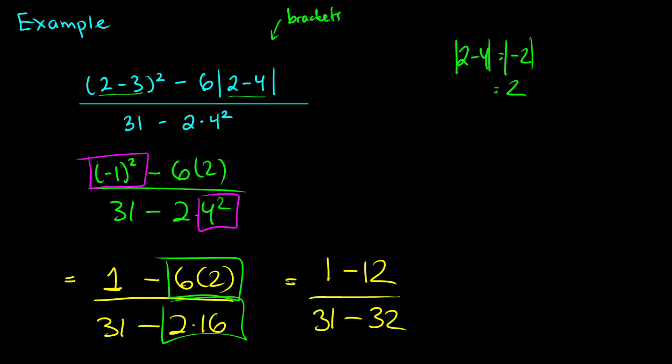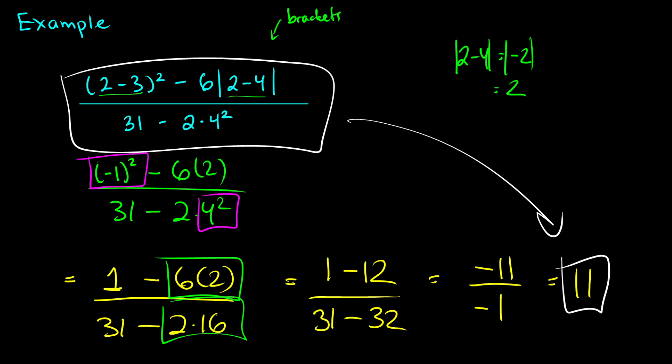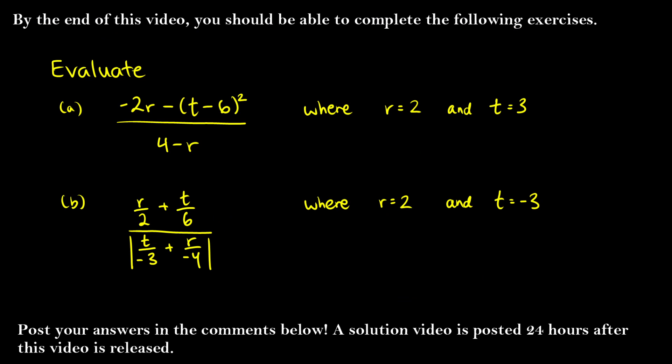Now we just have subtraction left. 1 minus 12 is negative 11. 31 minus 32 is negative 1. We're left with negative 11 over negative 1. A negative divided by a negative cancels out to give a positive, so our final result is 11. This complex expression simplifies to 11. That was three examples with order of operations — now you should be able to do the two practice questions. Post your answers below, and feel free to leave any questions in the comments.